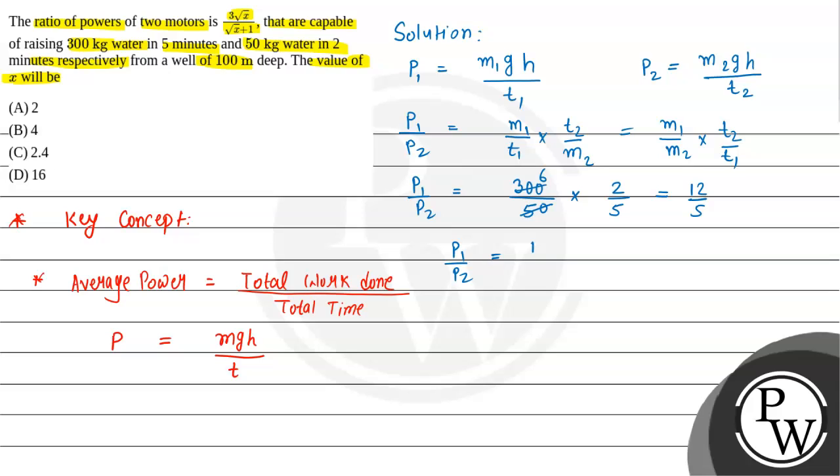Now according to the question, the ratio given to us is 3 times √x divided by √x + 1. We need to compare these and find the value of x. As we know, the square root of 16 equals 4. If we put this here, this becomes 3 times √16 divided by √16 + 1.